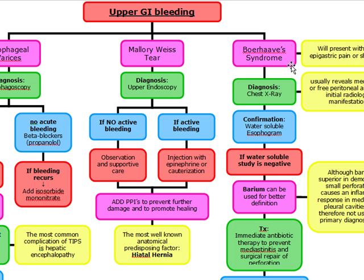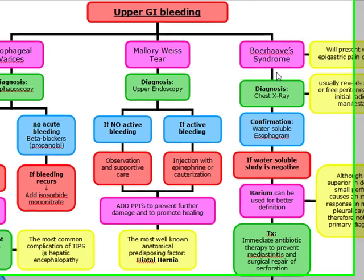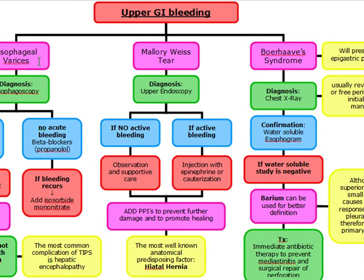Boerhaave syndrome also occurs in alcoholics — specifically a retching alcoholic. They present with dyspnea, epigastric pain, or shoulder pain. Unlike varices and Mallory-Weiss tears where we use endoscopy, in Boerhaave's we do a chest X-ray.